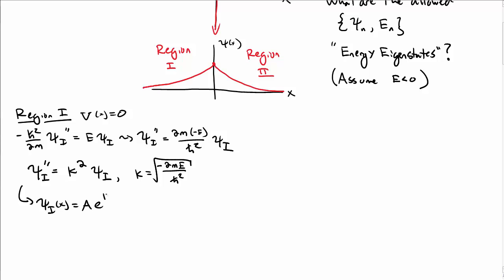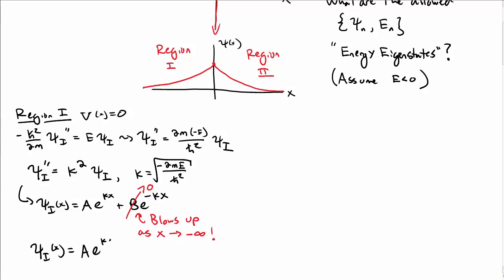Solutions look like A e to the kx plus B e to the minus kx. But we're in region 1, so we want to get rid of the minus kx term because it blows up as x goes to minus infinity. So we set B equal to 0 in order to have a normalizable solution. The solution in region 1, psi 1, is A e to the kx.